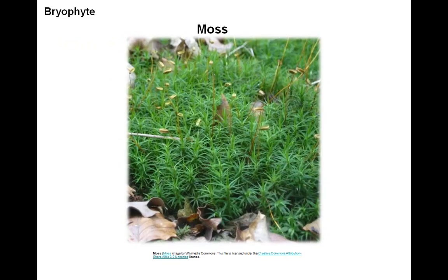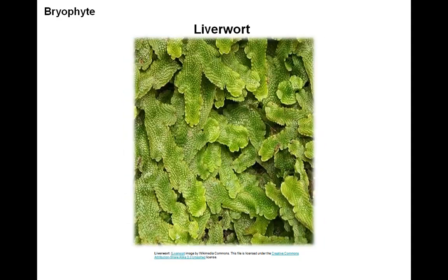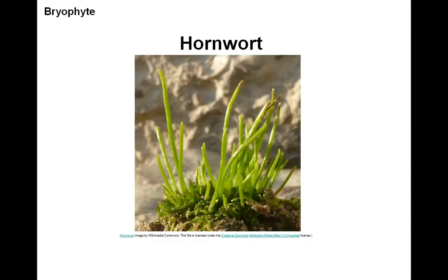Here we see examples of bryophytes — mosses, where the green tissue is the gametophyte and the brownish stalk is the sporophyte. Here we see liverworts, where this is the gametophyte stage, the dominant stage. And hornworts.